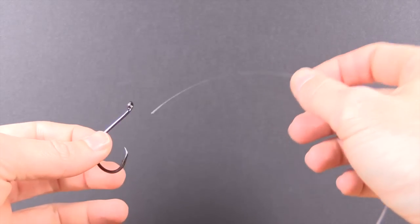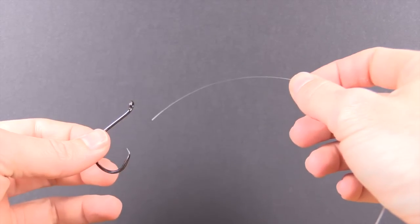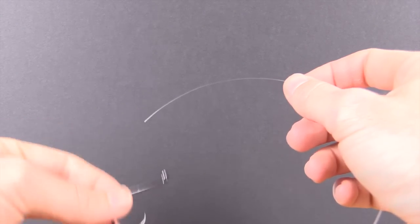In this video, we're going to tie the perfection loop knot. This is another knot that's really small and fairly easy to tie. So let's go ahead and get started.